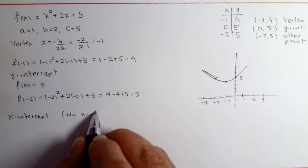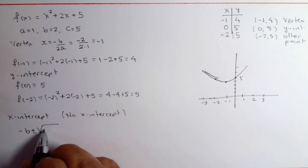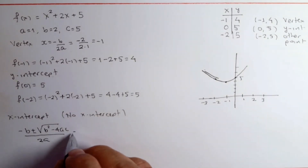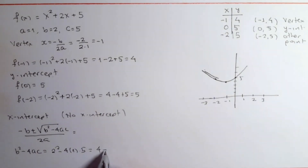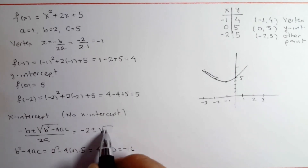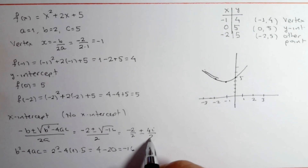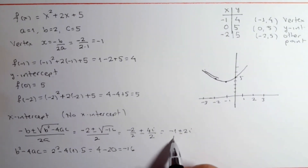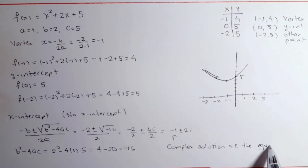In this case, there is no x-intercept. We can solve the equation f of x equals 0 using the quadratic formula and complex numbers. No real solution means that there is no x-intercept.